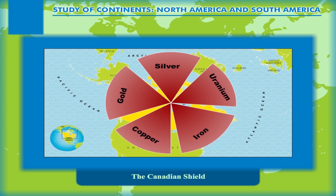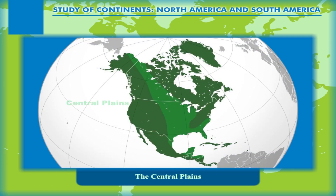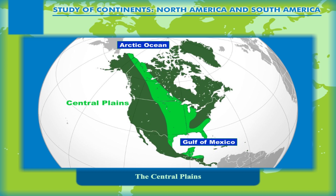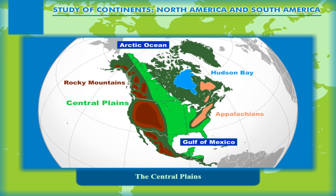The Central Plains stretch from the Arctic Ocean in the north to the Gulf of Mexico in the south. These lowlands are bordered by the Rocky Mountains or the Western Cordilleras in the west and the Appalachians to their east. The Canadian Shield borders these plains along the coastal areas around the Hudson Bay.